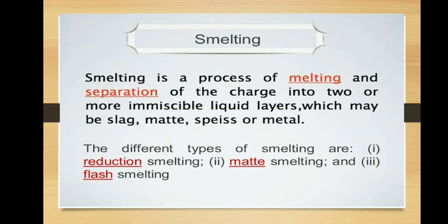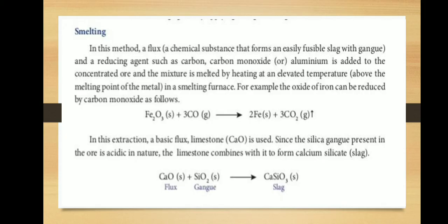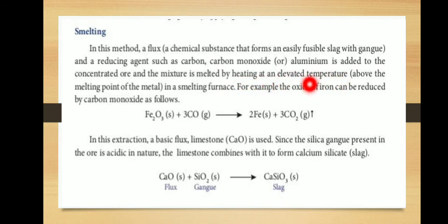Smelting is a process of melting and separation of the charge into two or more immiscible liquid layers, which may be slag, matte, speiss, or metal. The different types of smelting are: reduction smelting, matte smelting, and flash smelting. In this method, a flux and a reducing agent such as carbon, carbon monoxide, or aluminium is added to the concentrated ore, and the mixture is melted by heating at an elevated temperature in a smelting furnace.